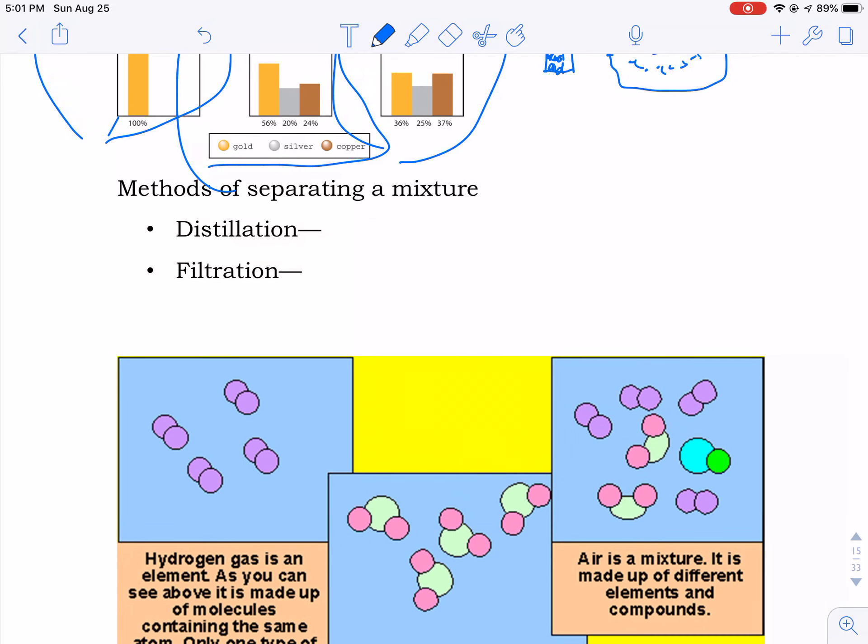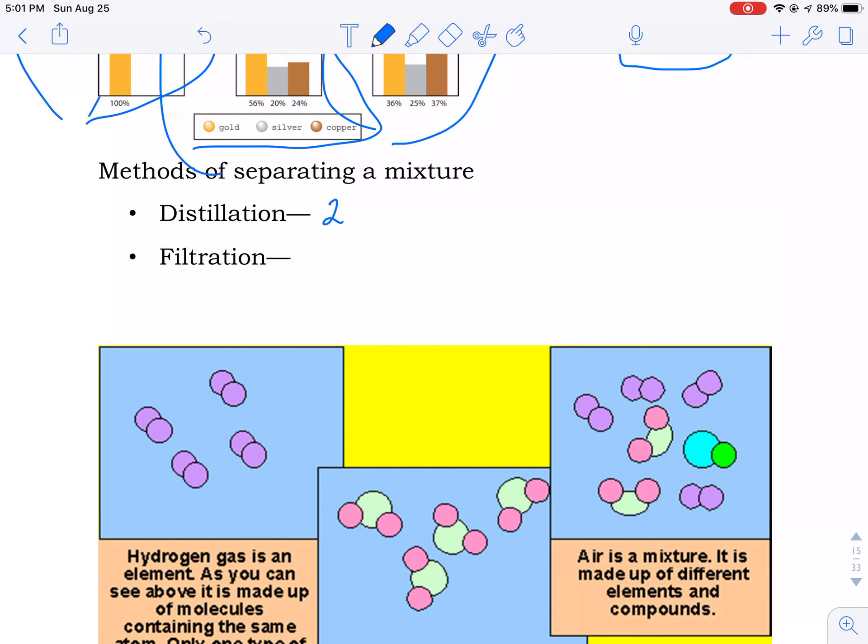One method of separating a mixture is distillation. That's when you have two or more substances, at least one being a liquid, and you boil it, and for instance, if you have salt water, and you boil it, the water molecules will come off and leave the salt behind. Distillation simply means you're using different boiling points to separate substances.